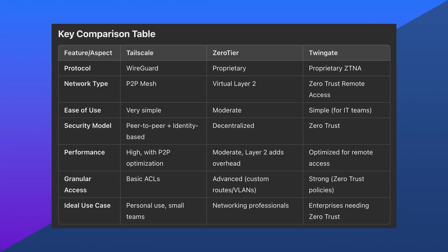My final thoughts: choose Tailscale if you need a simple, lightweight, and fast way to connect devices securely. Choose ZeroTier if you require advanced networking features like layer 2 capabilities. And select TwinGate if you're focused on enterprise zero-trust remote access with strict security policies. Here's a table on screen that I've created and done some research on if you are looking at specific specs.